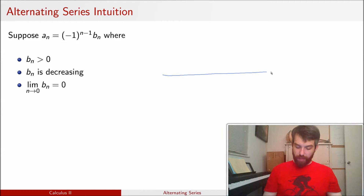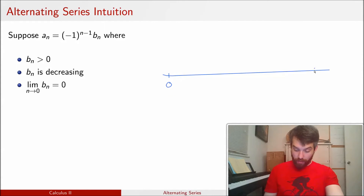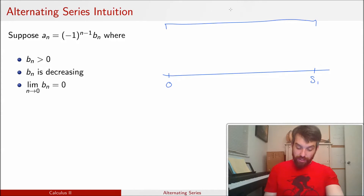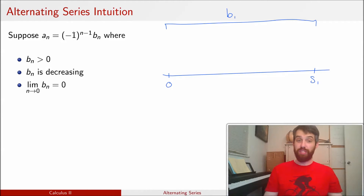Imagine the number line, starting at 0. I add my first term, jumping all the way over to s1. That jump represents an amount b1. Since we're using n=1, (-1)^(1-1) = (-1)^0 = 1, so a1 = b1, and the first partial sum is just a1. So indeed I have a gap of s1.